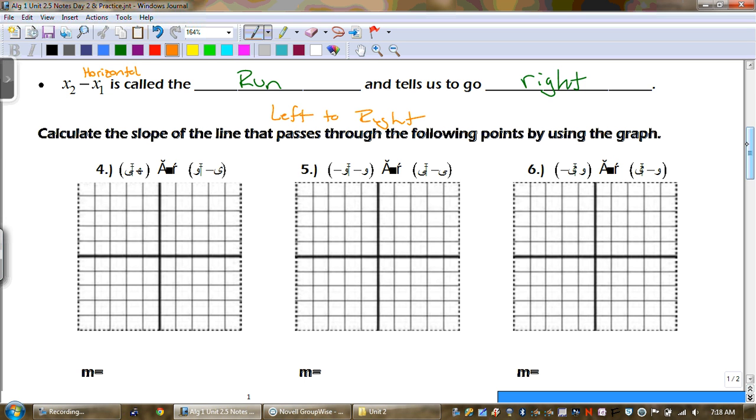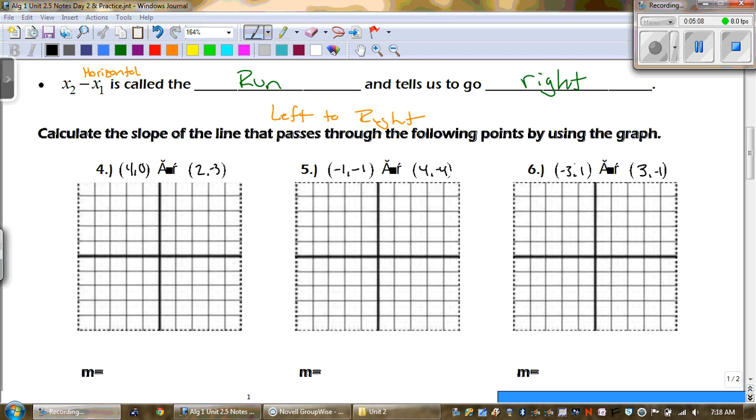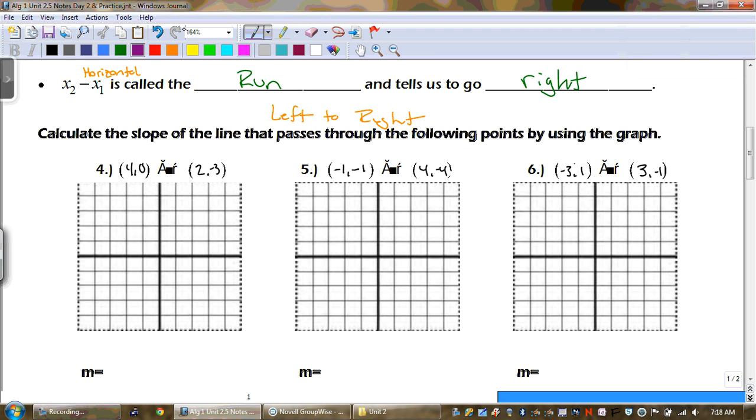So what we're going to be doing here is we need to be graphing these points. Our first one is 4, 0. So I go to 4, go to 0, and take my point. My next one is 2, negative 3. Got my point. After we've got our point, the next thing we need to do is draw our line. Now there's a way to do this to find out what our slope is without using these points, without doing the equation. We're going to do it from the graph.